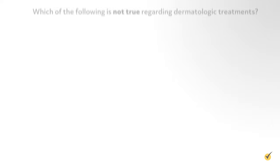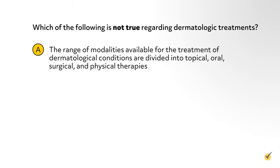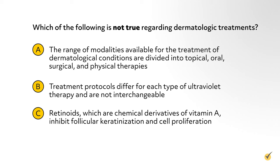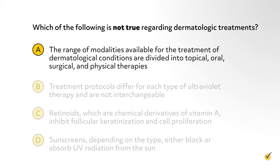Let's review. Question 1: Which of the following is not true regarding dermatologic treatments? A. The range of modalities available for the treatment of dermatological conditions are divided into topical, oral, surgical, and physical therapies. B. Treatment protocols differ for each type of ultraviolet therapy and are not interchangeable. C. Retinoids, which are chemical derivatives of vitamin A, inhibit follicular keratinization and cell proliferation. D. Sunscreens, depending on the type, either block or absorb UV radiation from the sun. If you chose A, you are correct. Treatment of dermatological conditions are divided into systemic, topical, physical modalities, and surgical therapies.